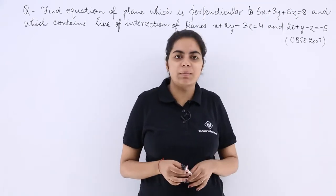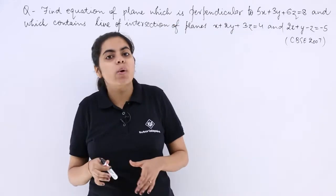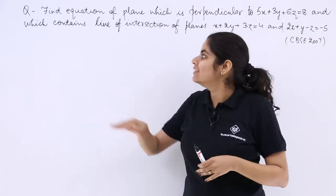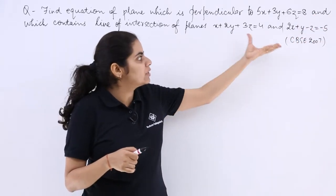This question was asked in the CBSC examination 2007. It says find the equation of the plane which is perpendicular to this given equation and which contains the line of intersection of the planes first and second.